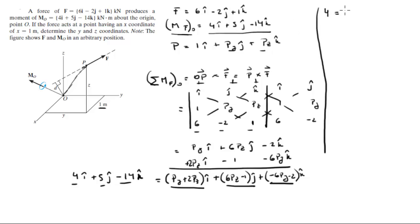4 is equal to Py plus 2Pz. This is going to help us later. The second one is 5 is equal to 6Pz minus 1. You can already solve for Pz. Pz is equal to, the minus 1 goes to plus 1, which is 6 divided by 6. Pz comes out to be 1.